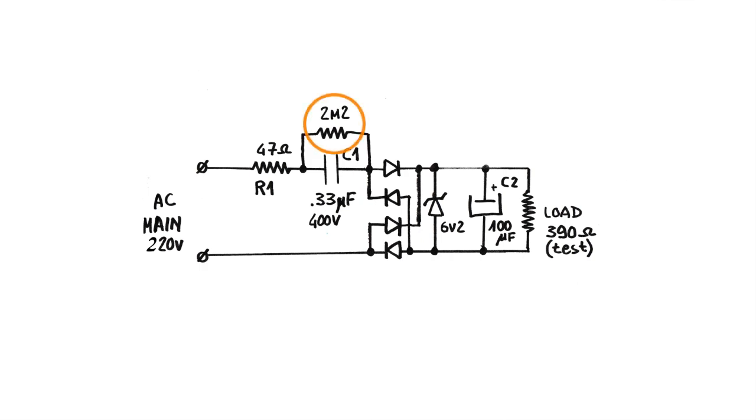The 2.2 megaohm resistor attached in parallel prevents the risk of an electric shock at dangerous voltage when the circuit is powered off by discharging the capacitor.